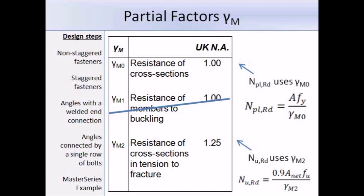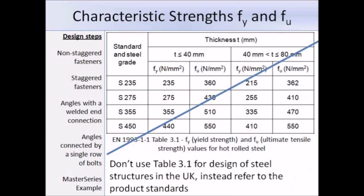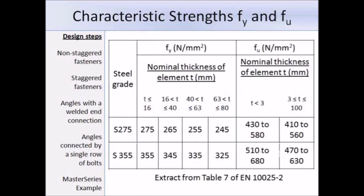In the Eurocodes you will see table 3.1, which gives values for yield strength and ultimate tensile strength. However, a note before the table states that the National Annex can change these values. The UK National Annex directs us to use the product standards instead of this table, so table 3.1 does not apply in the UK. Instead we refer to the product standards — for example, table 7 from EN 10025-2 for rolled sections, where strengths are based on steel grade and material thickness.